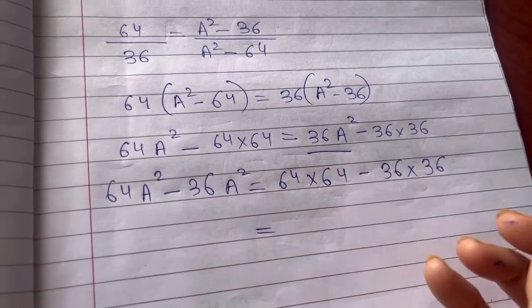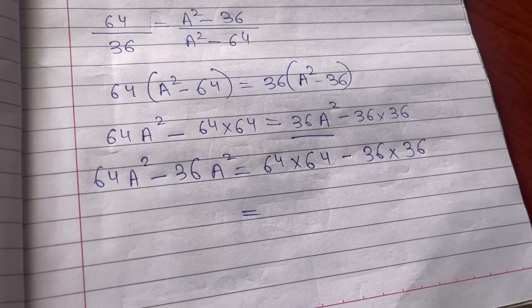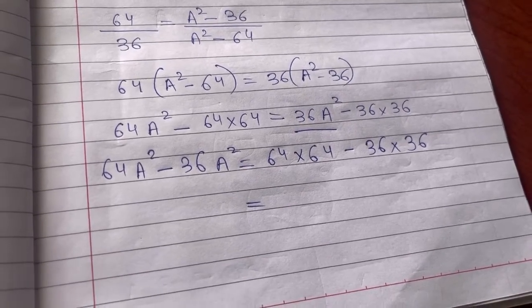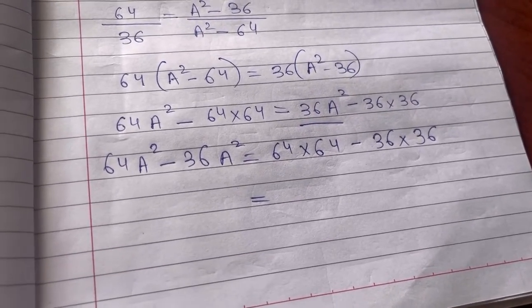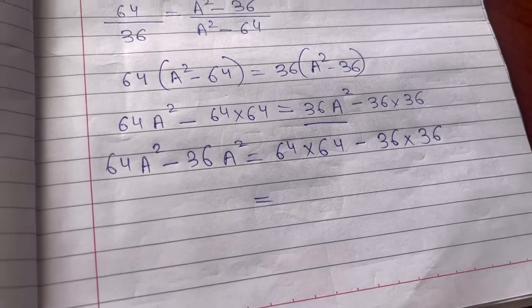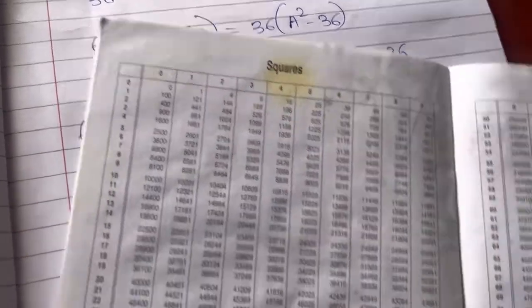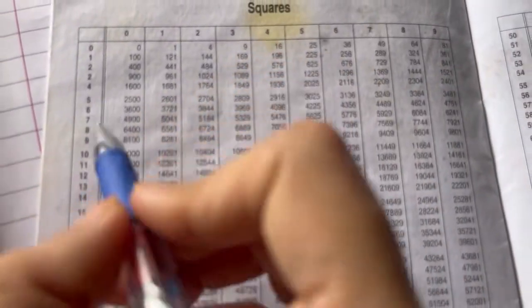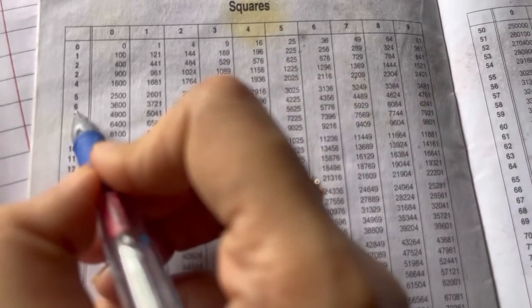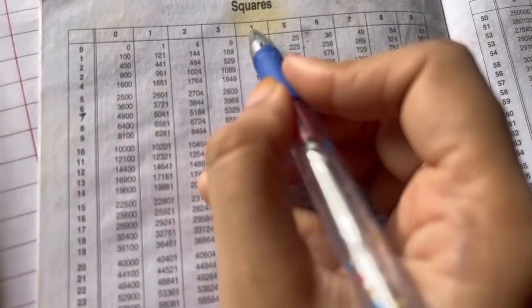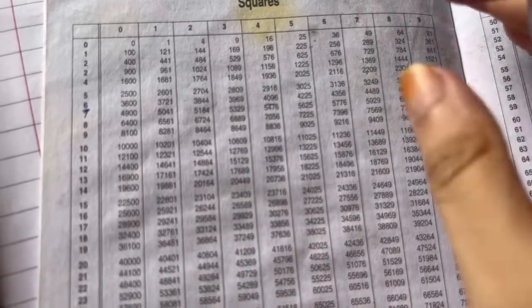Just multiply them, find the squares of them and substitute. We can do that. So for finding squares, instead of multiplying, we have this. Now we want to look at the square of 64. So you will look like this in the square section: 6 with 4 gives 4096.